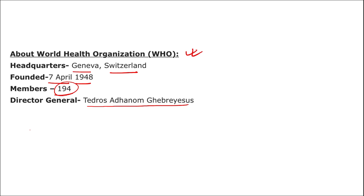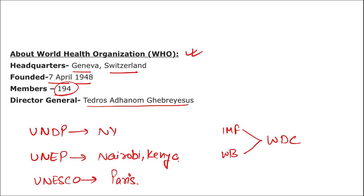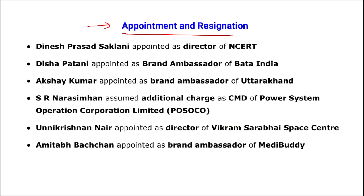Quick HQ revision: UNDP headquarter is in New York. UN Environment Programme (UNEP) headquarter is in Nairobi, Kenya. UNESCO headquarter is in Paris. IMF (International Monetary Fund) and World Bank both have their headquarters in Washington DC.